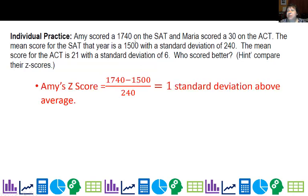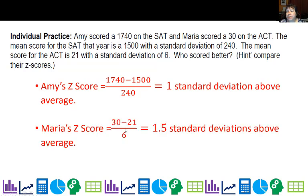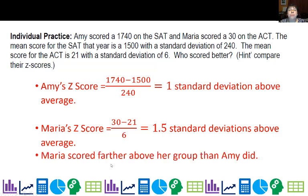So for Amy, Amy's z-score is going to be her score minus the mean, which is 1500 in this case, and the standard deviation is 240. So we just divide it by 240. Her score is one standard deviation above the mean. Maria has a score of 30 compared to the average of 21 and divided by 6. Maria's z-score is one and a half standard deviations above the average or the mean. So based on this, Maria is standing out a little bit more compared to the SAT scores than Amy is. So Maria scored farther above her group on a standardized level than Amy did.